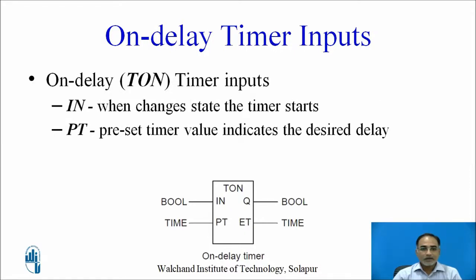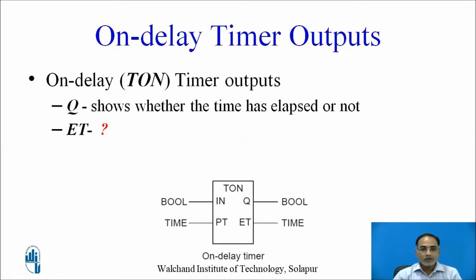The IN input, when it changes, starts the timer. The data type associated with this input is boolean, meaning you expect either 0 or 1. PT, that is preset time, indicates the desired delay in your operation, and its data type is time, meaning you specify the delay in seconds.